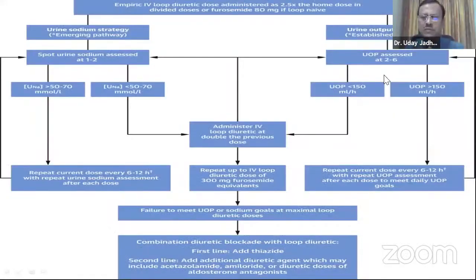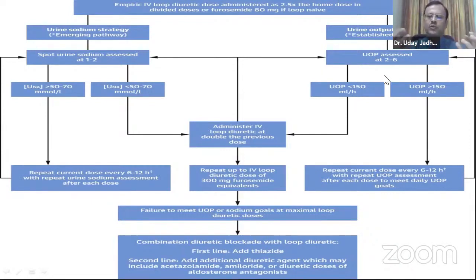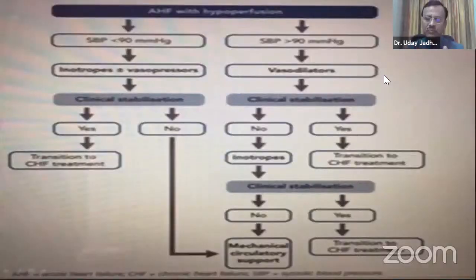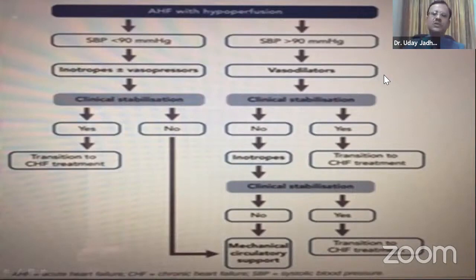A recent algorithm from JACC Heart Failure recommends dosing at 2.5 times the home dose in divided doses, or furosemide 80 mg IV. Follow two parameters: spot urine sodium and urine output. If urine output is less than 150 mL per hour or urine sodium is less than 50–70, double the IV loop diuretic dose. If it still doesn't settle, add a sequential diuretic. For inotropes: use them if blood pressure is below 90; use a vasodilator if above 90.